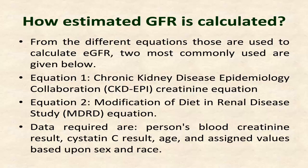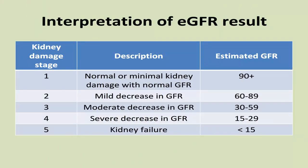Data required for eGFR calculation are a person's blood creatinine result, cystatin C result, age, and assigned values based upon sex and race. Interpretation of eGFR results: an eGFR value greater than 90 indicates normal or minimal kidney damage with normal glomerular filtration rate.